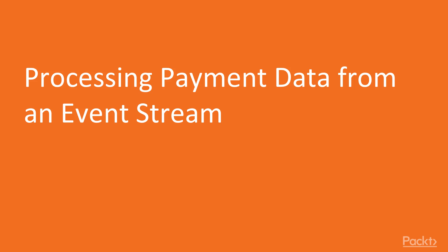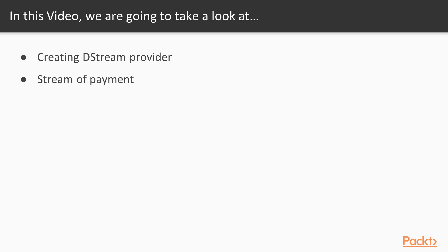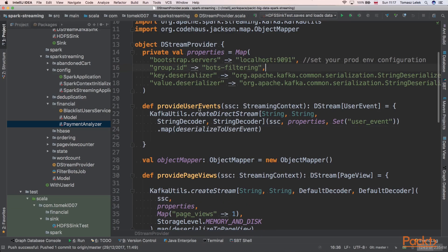So we will be creating the stream provider that provides a stream of payments to our application. We have a streaming project and we will start by implementing the stream provider. This is a provider that will fetch data from Kafka, and on Kafka there will be data about payments.